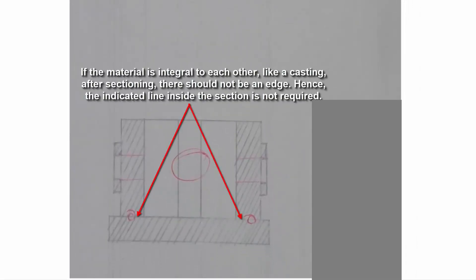If the material is integral to each other, like casting, after sectioning, there should not be an edge. Hence the indicated line inside the section is not required.